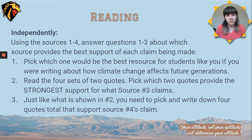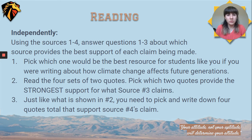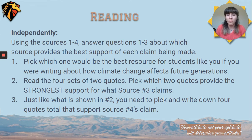Question 1 asks: which source would be the best resource if you were writing about how climate change will affect future generations — your children's children's children — which source would help you write that the most? The next question has four sets of two quotes. You need to pick which set of quotes provides the strongest support for what source number three has been claiming. So if source number three was looking for citations from other sources you've read, which quotes in that set answer those questions best?